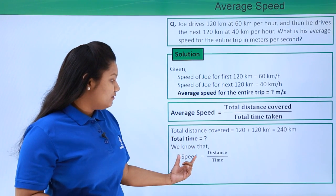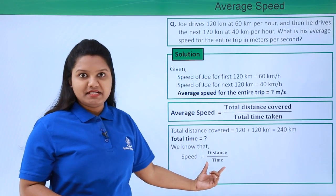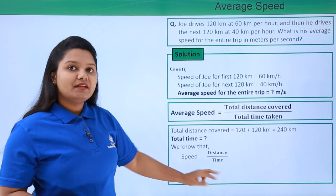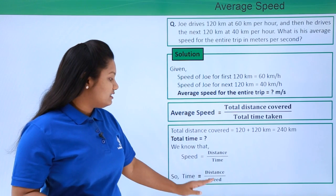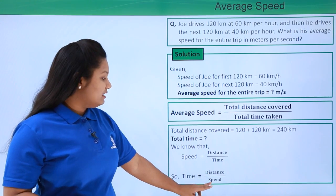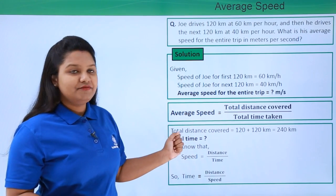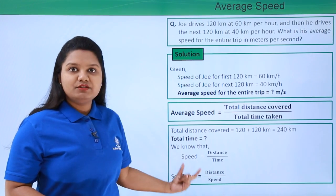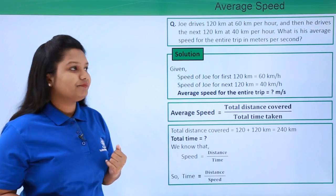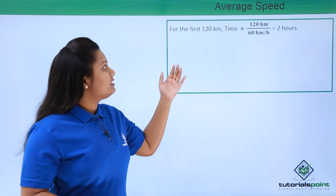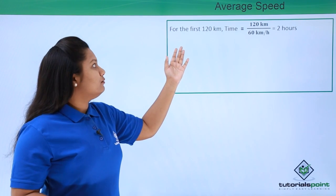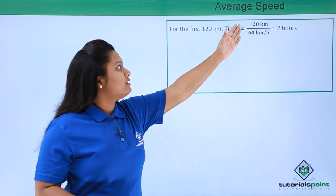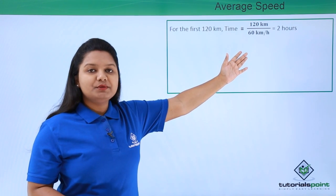For the total time taken, we know that the formula for speed is distance divided by time, and from this we can find that time equals distance divided by speed. Both these values are already given in the question. For the first 120 kilometers, the speed was 60 kilometers per hour, so the time becomes 120 divided by 60.